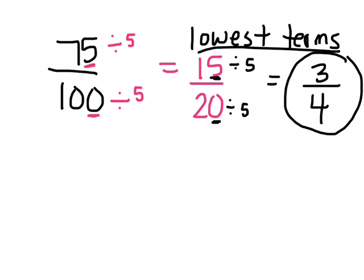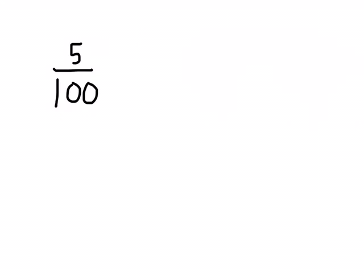That's where we're going to stop. That's the lowest terms, because 3 and 4 can't be divided by any other numbers that are the same, except for 1, right? But anything divided by 1 is still the answer itself.